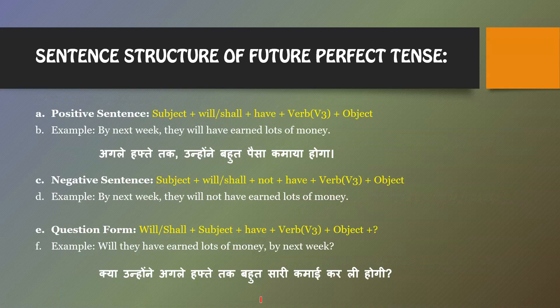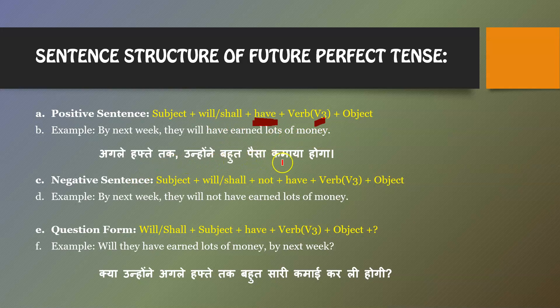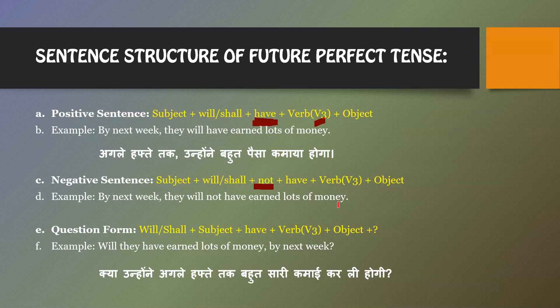In perfect tense we use 'have' — just as present tense uses 'has/have' and past tense uses 'had,' future perfect uses 'have.' The structure is: subject + will/shall + have + third form of the verb + object. Example: 'By next week they will have earned lots of money.' For negative, we add 'not': 'By next week they will not have earned lots of money.'